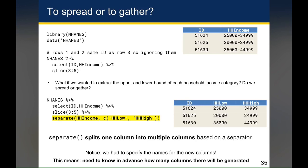And the next argument is a character vector, which contains the names of the columns you actually want to create. So in this case, the variables that we wanted to create were HH low and HH high to signify the low and high values of household income.